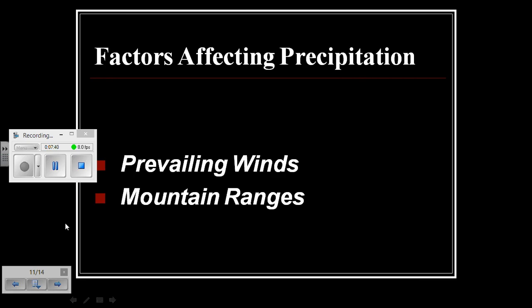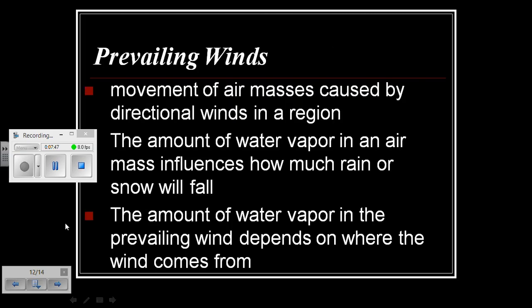Factors that affect precipitation include prevailing winds and mountain ranges. Prevailing winds represent movement of air masses caused by directional winds in the region. The amount of water vapor in an air mass influences how much rain or snow will fall. The amount of water vapor in the prevailing wind depends on where the wind comes from.